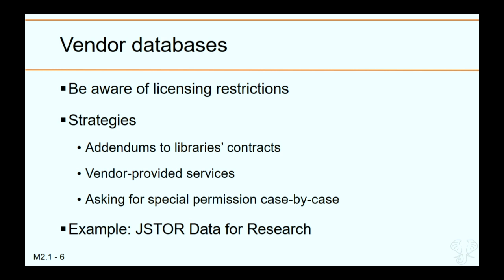Some vendors do have text mining services — Gale is building a tool, JSTOR Data for Research, LexisNexis — but they can be expensive and sometimes hard to work with. In some cases, getting special permission also requires fees. One example is JSTOR Data for Research, which is open and available and provides limited types of corpora from the JSTOR collection.